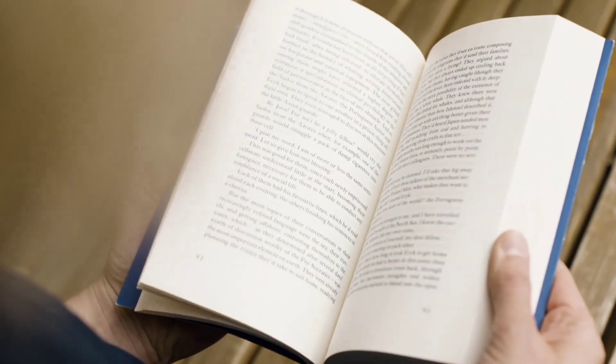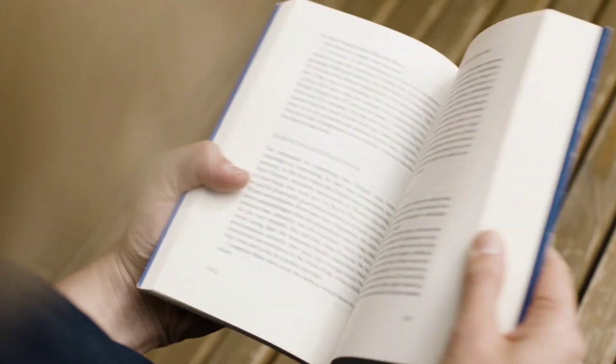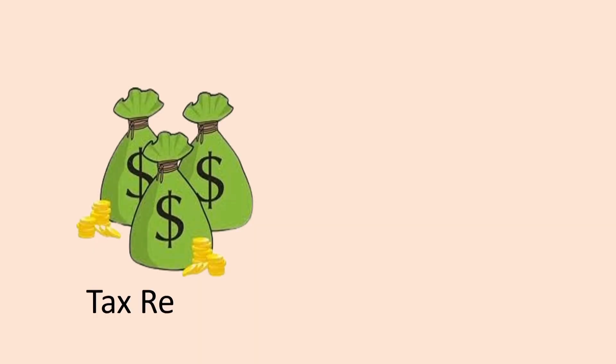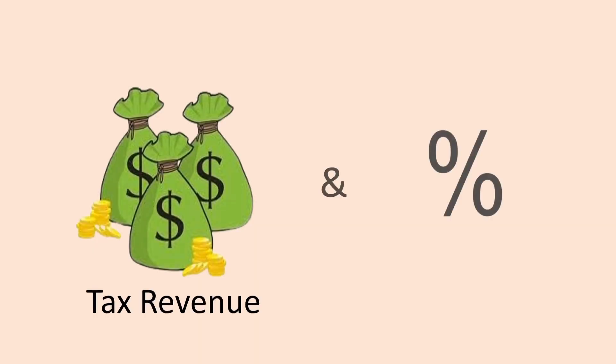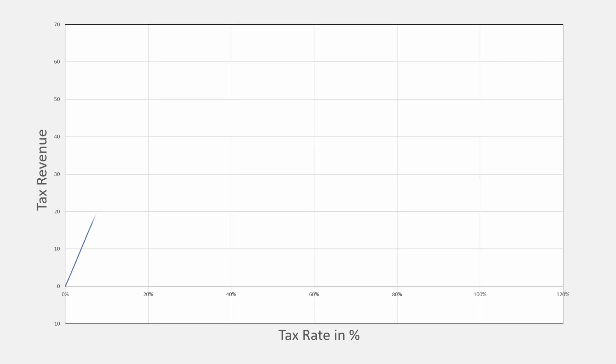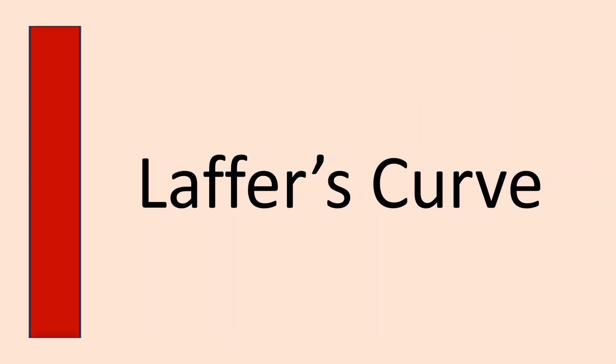In economics, there is this interesting and yet simple concept that tells you about the relationship between the tax revenue collected and the taxation rate. This relationship is shown in a bell-shaped curve, and it is called the Laffer curve.